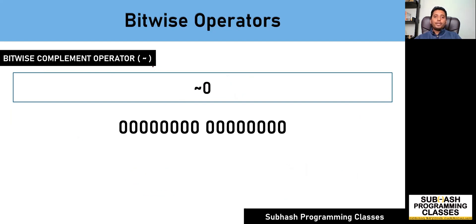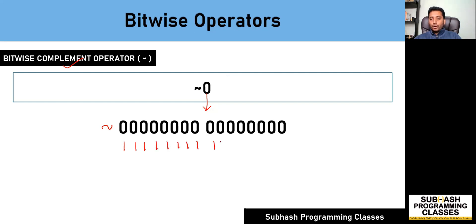Let us move on to the final operator in the set of bitwise operators — the bitwise complement operator. The bitwise complement operator is used to invert a given bit: if you encounter a bit of 0, the complement operator will invert it to 1, and if it encounters a 1, that 1 is inverted to 0. So for tilde of 0, the number 0 in 16-bit binary is all zeros. When I apply the complement operator, all 0s become 1s. All 1s are nothing but minus 1 in two's complement method. So the bitwise complement of 0 gives minus 1.